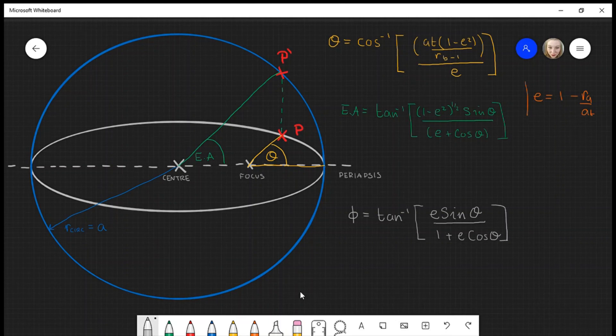As you can see, if you don't have phi, you will need the true anomaly to calculate it. You don't actually need the eccentric anomaly to calculate phi.